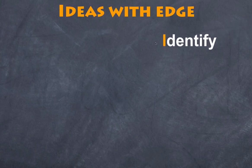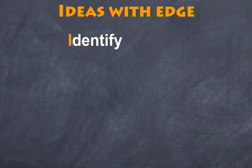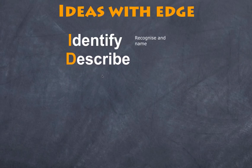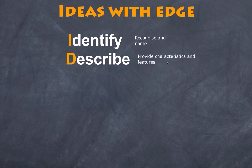Let's go through each point of the scaffold. The first letter, I, stands for Identify — recognizing and naming something. If your question simply asks you to identify something, that's all you need to do. But often you need to go further. If the question asks you to Describe something, that's clearly more than just identifying — it's identifying what you have and then providing characteristics and features of what you've just identified.